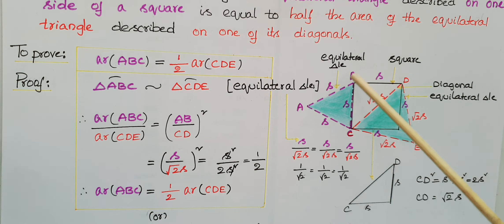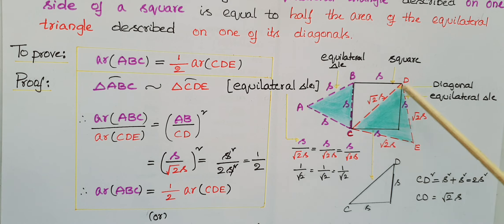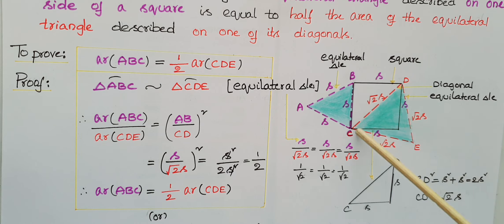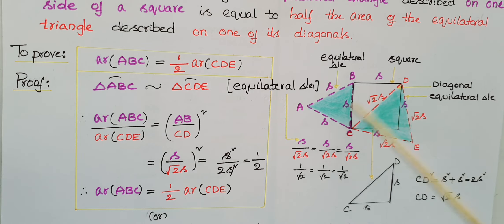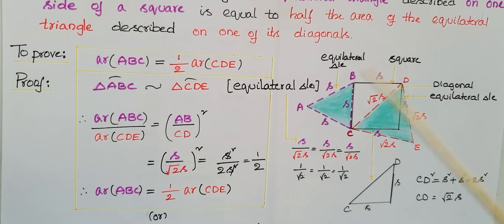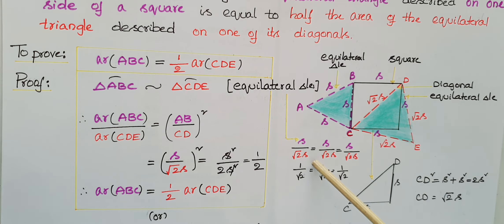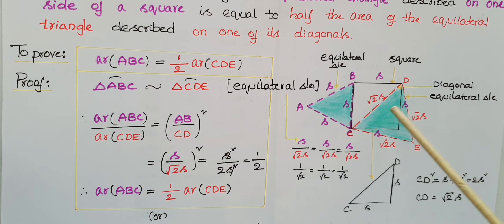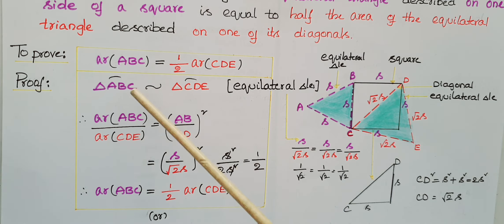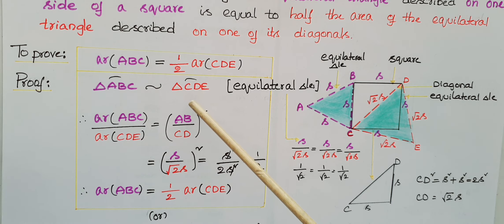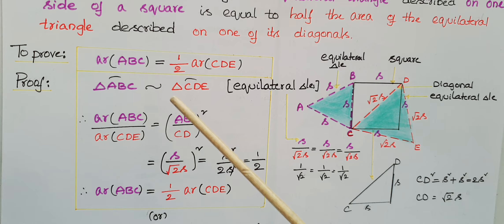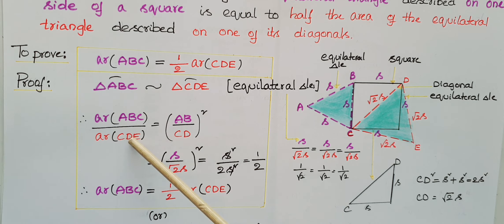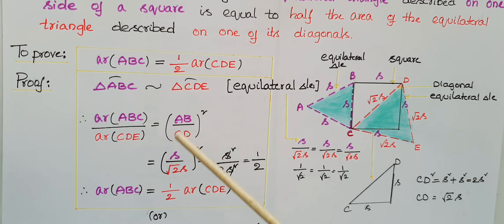Now we have to prove that the area of triangle ABC is equal to half of the area of triangle CDE. Since both are equilateral triangles, they are similar triangles — in an equilateral triangle each angle is 60 degrees, so corresponding angles are equal and corresponding sides are in the same ratio. Therefore, triangle ABC is similar to triangle CDE.